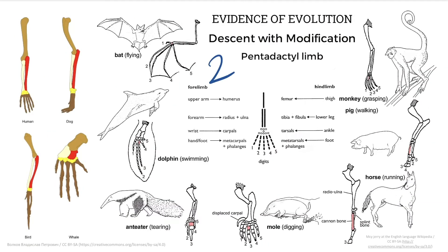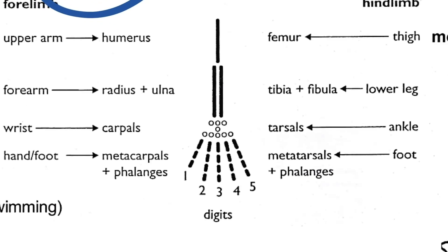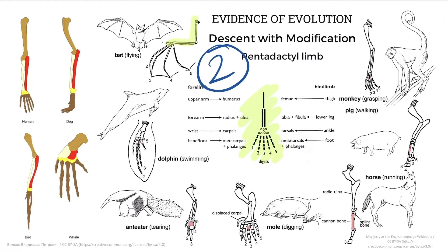Number two: descent with modification. This is where a basic body plan, or pattern of bones, can be modified in different ways to adapt to different environments. For example, this simple body plan of an upper limb can be adapted in bats for flying. These similarities of body plans suggest a common ancestor.